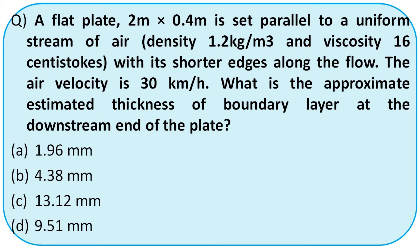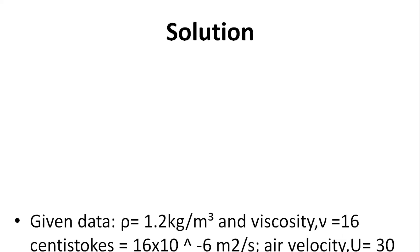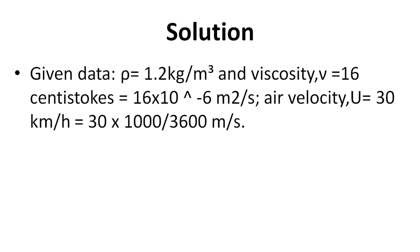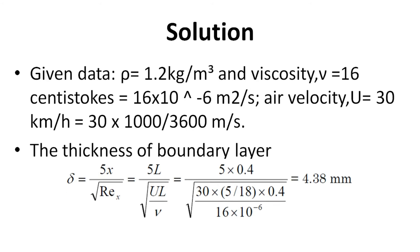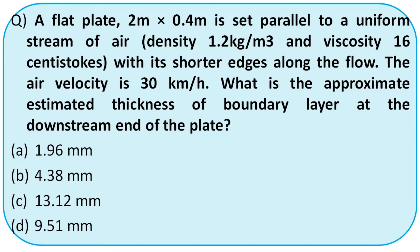Problem: a flat plate 2 m × 0.4 m is set parallel to a uniform stream of air with density 1.2 kg/m³ and kinematic viscosity 16 centistokes (= 16×10⁻⁶ m²/s), air velocity 30 km/h converted to m/s. Recalling δ = 5x/√Re and applying the formula, we get boundary layer thickness as 4.38 mm. So the right option is option B.